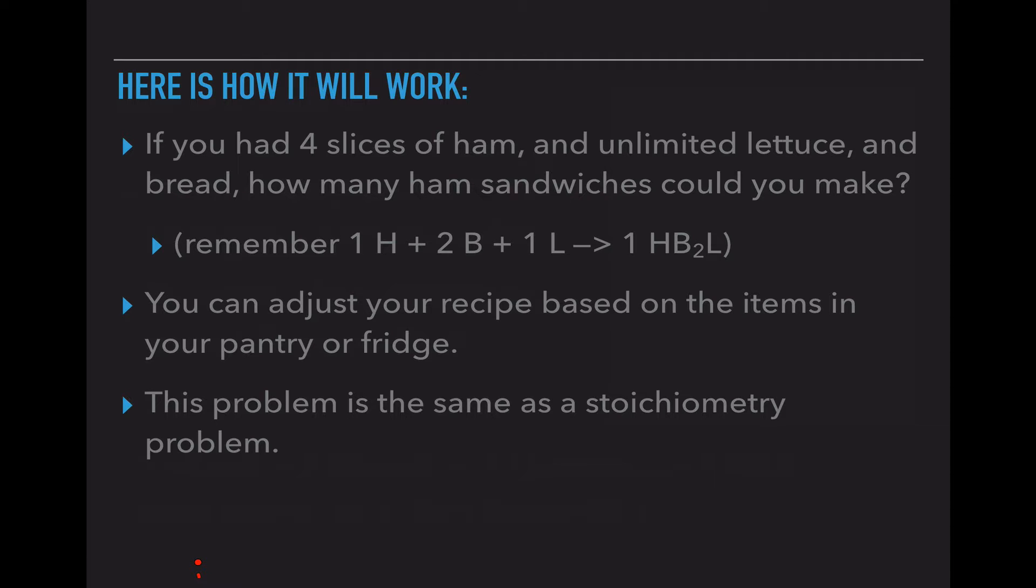And a stoichiometry problem starts exactly like this. It limits one of the items in the chemical formula. So if you have four slices of ham and unlimited lettuce and unlimited bread, how many ham sandwiches could you make? So I rewrote the chemical formula on this slide so we can reference it again. And we're going to go back and actually adjust our recipe based on the items in our pantry or our fridge. This is essentially a stoichiometry problem.